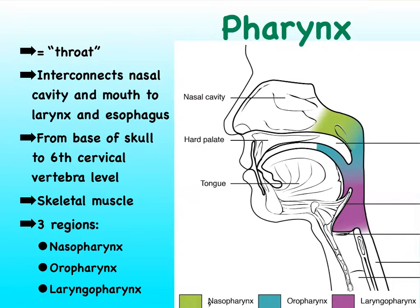In layman's terms we tend to refer to the pharynx as our throat, because the pharynx is mostly the most posterior portion of the nasal cavity area and oral cavity area and a bit beyond that. It literally allows for our nose and mouth to be connected to the larynx and the esophagus. The larynx will eventually turn into our trachea. It starts at about the level of the base of the skull and continues to about the sixth, or second to last, cervical vertebra.